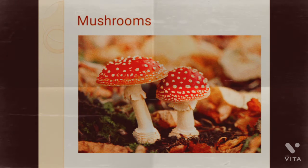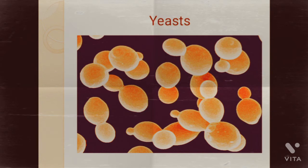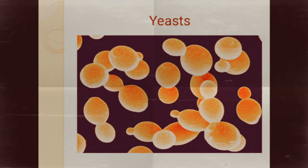There is another type of fungus called yeasts. This is the structure of a yeast — you can see single cellular elliptical cells. These yeasts are useful in fermentation, and the bread which we manufacture is prepared by using yeasts.